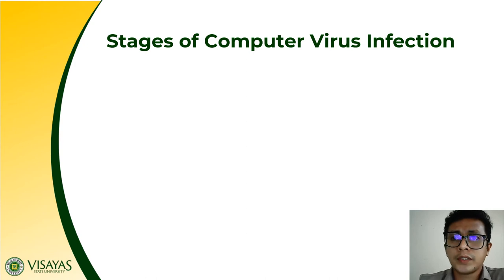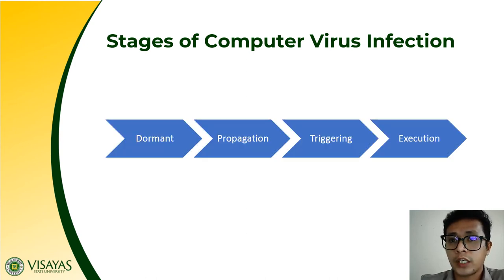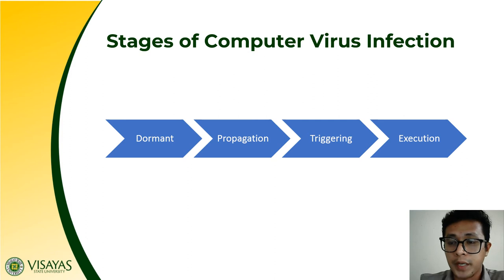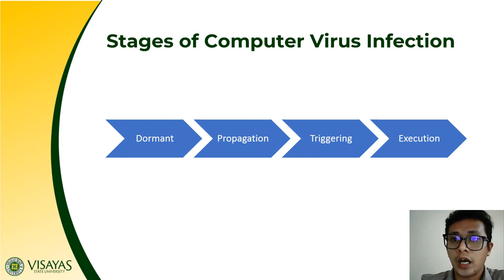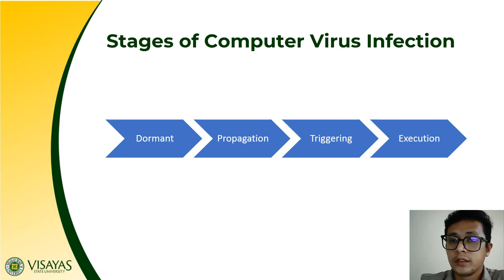There are also stages of computer virus infection. It is not an instant manner — there are stages on how a virus infects a computer system. Typically, a virus goes through the stages of dormancy, propagation, triggering, and execution. During the dormant stage, the virus is just sleeping and doing nothing in the host system, waiting for some appropriate time to execute.